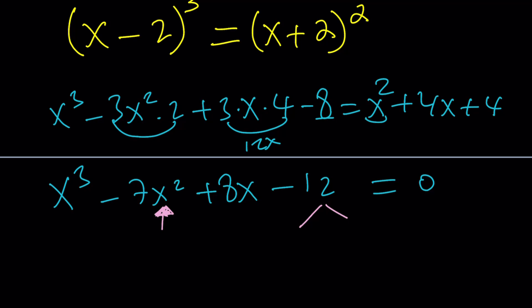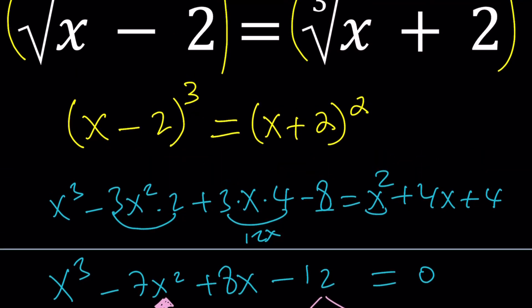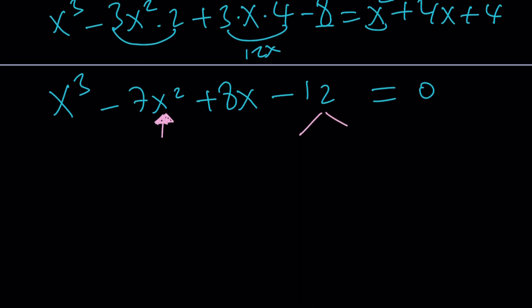But this, I think, is going to have a rational solution. And that solution is actually going to be coming from factors of 12. So they're going to be plus minus 1, plus minus 2, plus minus 3, plus minus 4, and then plus minus 6 and plus minus 12. A lot of candidates, but one of them is going to work.